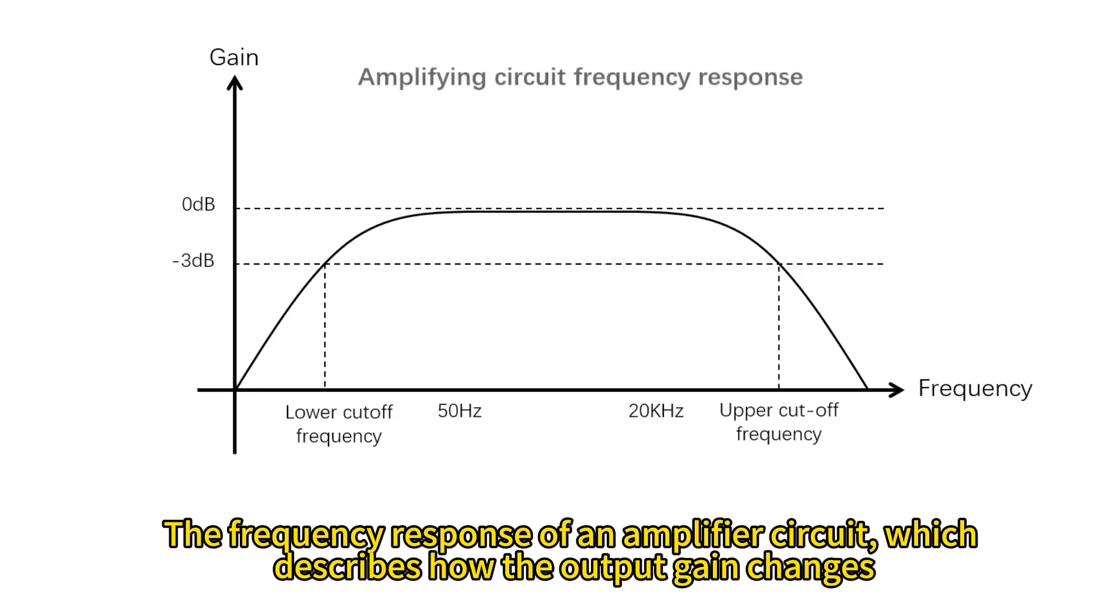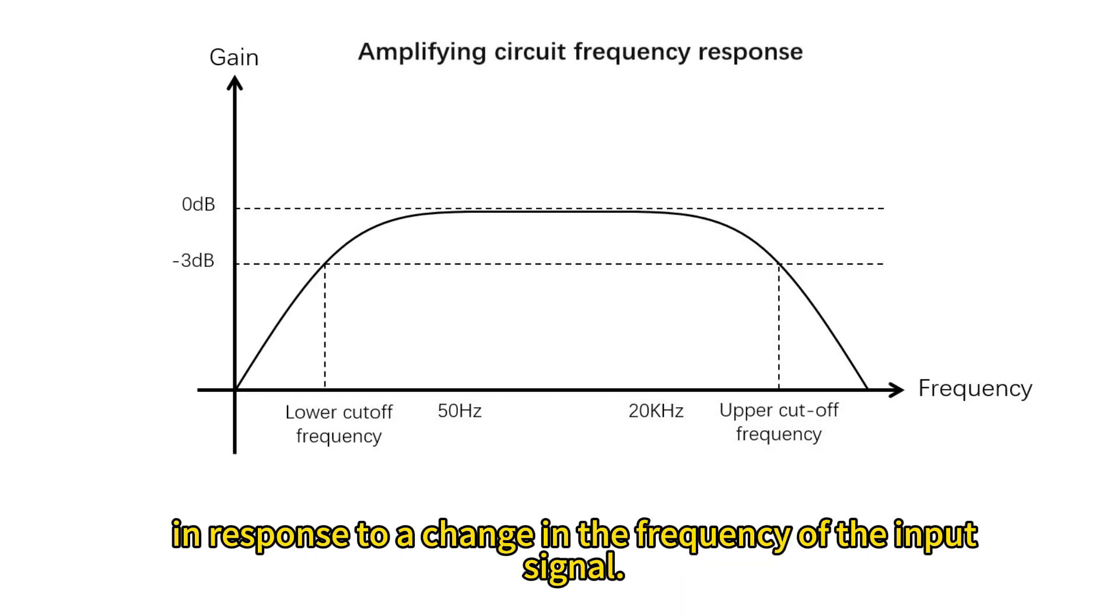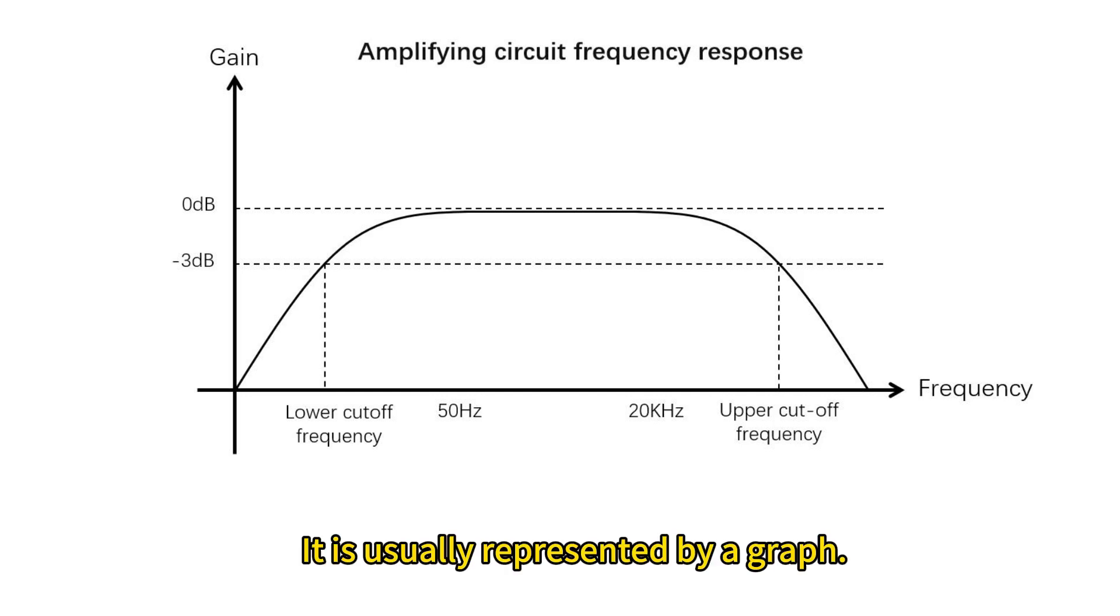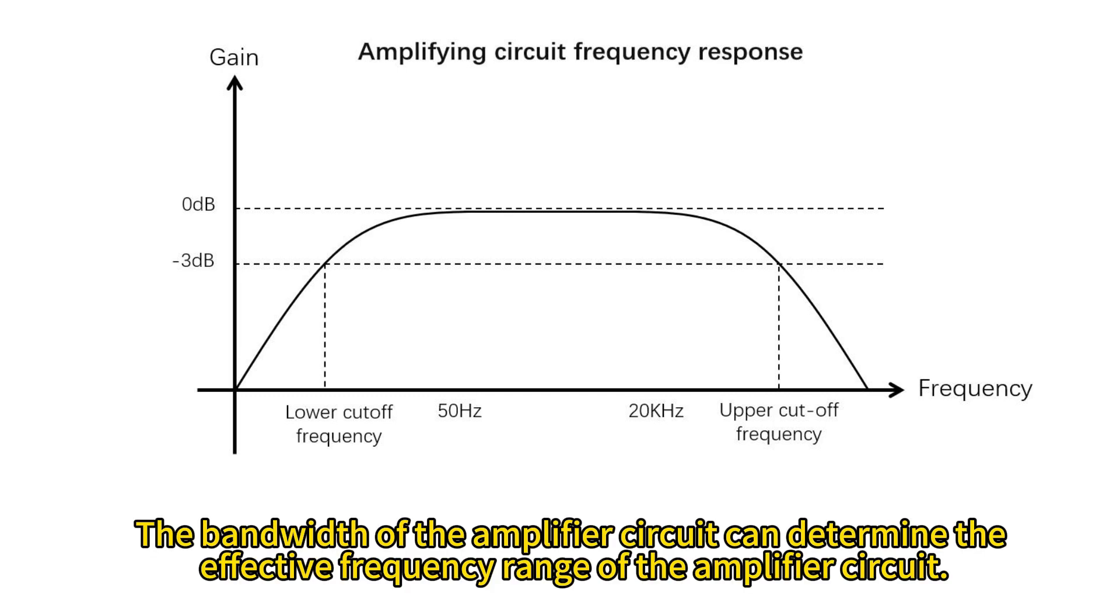The frequency response of an amplifier circuit describes how the output gain changes in response to a change in the frequency of the input signal. It is usually represented by a graph. The bandwidth of the amplifier circuit can determine the effective frequency range of the amplifier circuit.